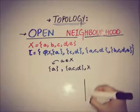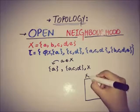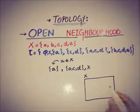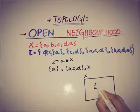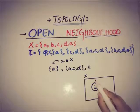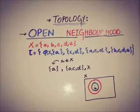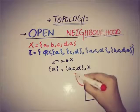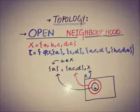So the randomly picked point a has three open neighborhoods: the first open neighborhood is {a}, the second open neighborhood is {a, c, d}, and the third open neighborhood is x itself. There are three open neighborhoods of that randomly picked point a.